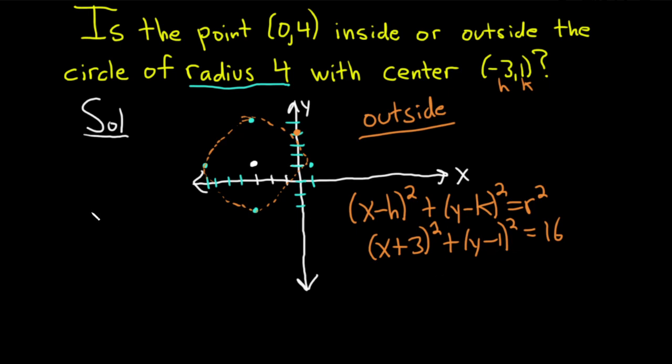However, if you look at this inequality, (x + 3)² + (y - 1)² greater than 16, this is going to be everything outside the circle.